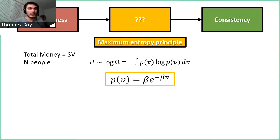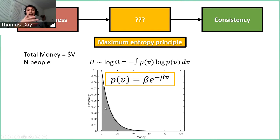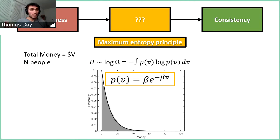I simulated handing out a hundred dollars to ten people about a thousand times. The black line is the predicted exponential distribution, and the gray bars are what actually happened in the simulations — we see really good agreement with the maximum entropy distribution. We can say a lot about what this distribution is solely by knowing what the constraint is, and that's pretty powerful.